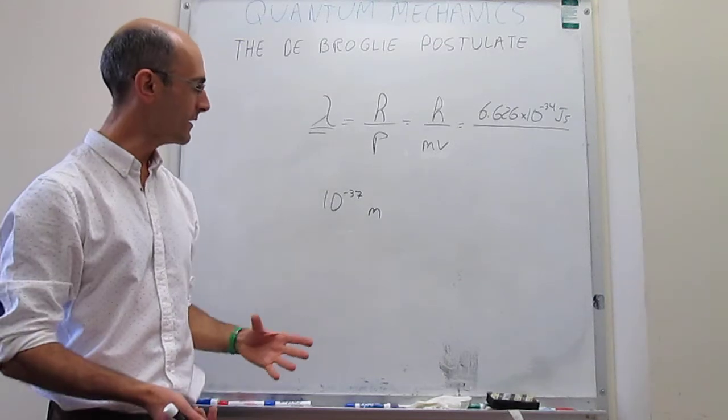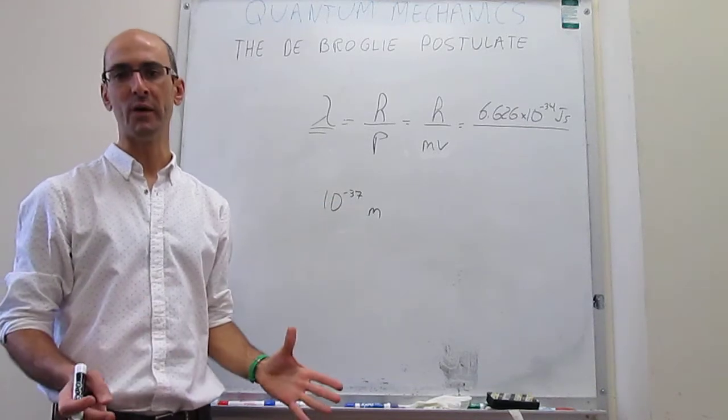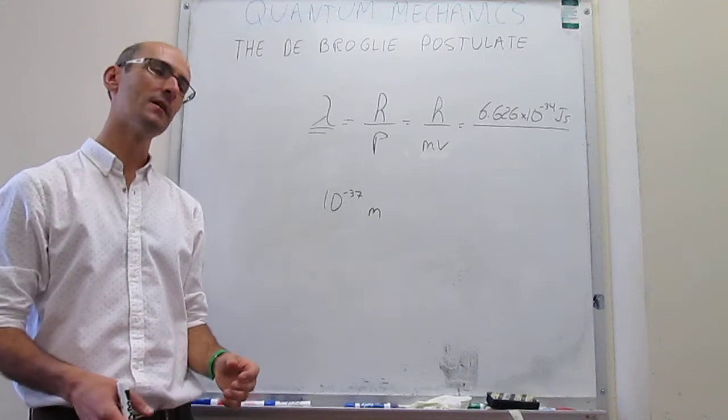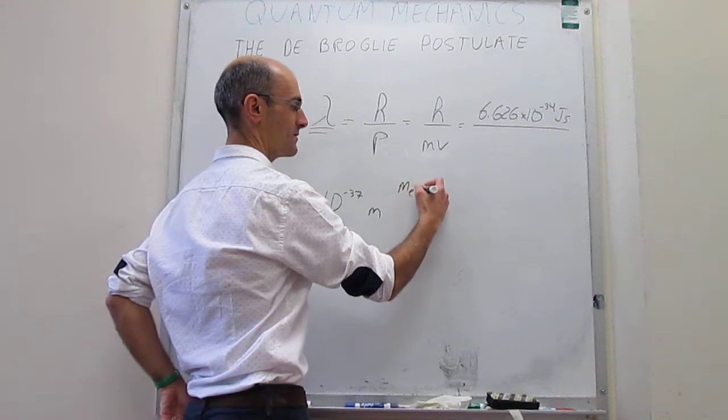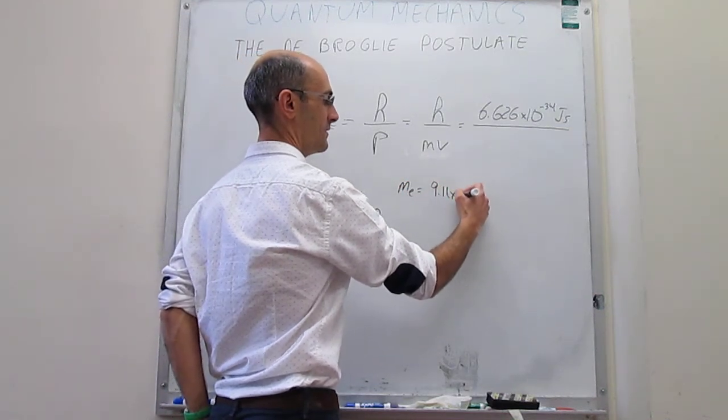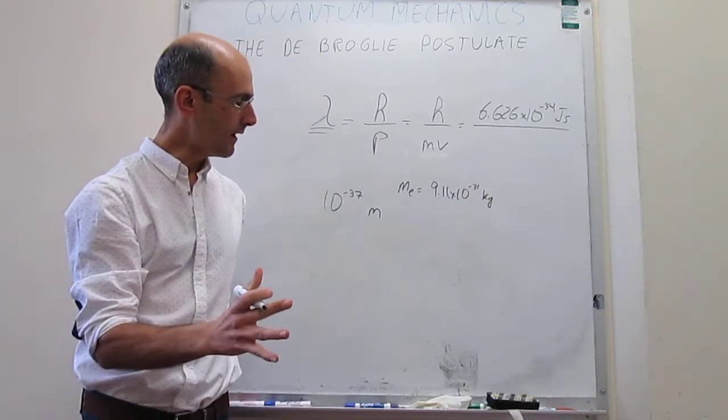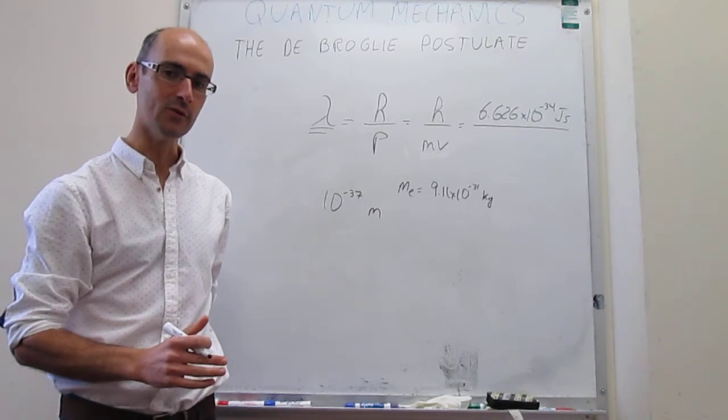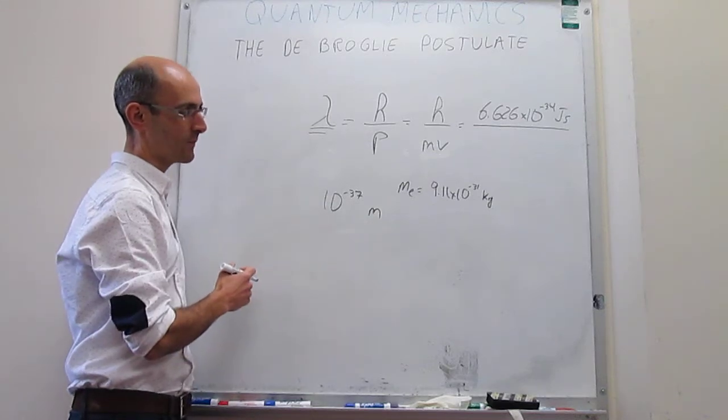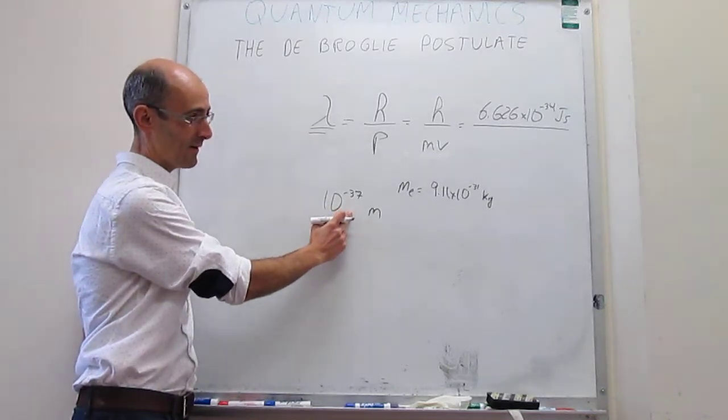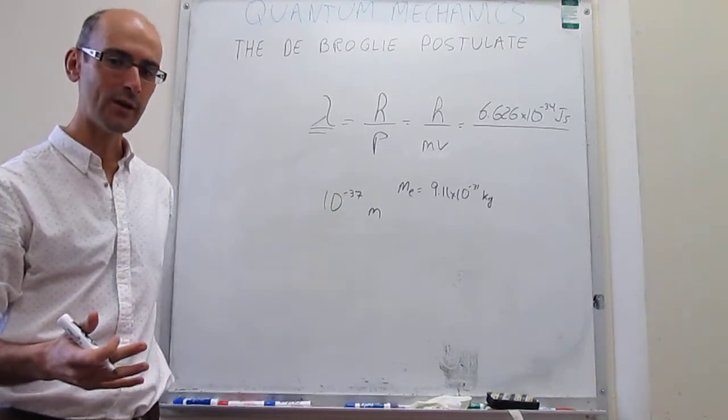This applies to even smaller objects like a baseball, actually even to a cell. Those objects are still very, very large, and what that means is that these wavelengths are so small that no wave properties should be expected, and we know that that is true. But if you actually now move to very, very small particles like an electron, the mass of an electron happens to be equal to 9.11×10^-31 kilograms. Notice that the mass of an electron is about 32 to 33 orders of magnitude smaller than that of a human.